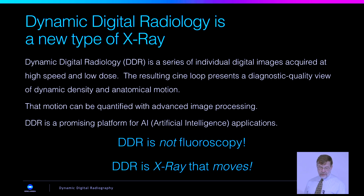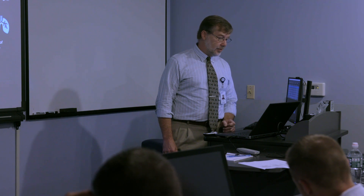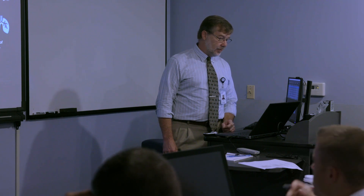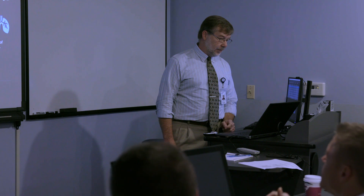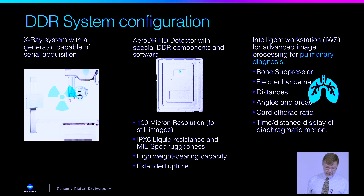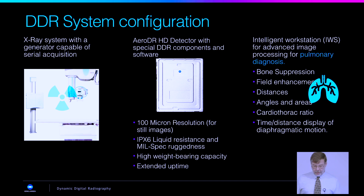The basic configuration we'll go over more later, but obviously you need an x-ray system. In your case, we're using your Shimadzu system modified to be capable of serial acquisition. So we have to have a special pulse generator and, of course, our Aero DR panel. And then we're going down to 100 micron resolution.